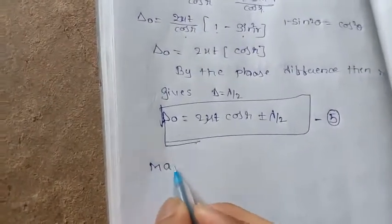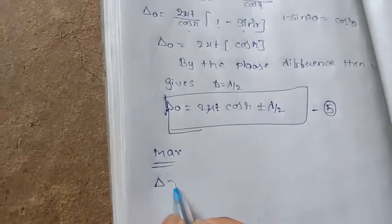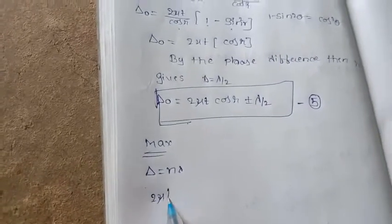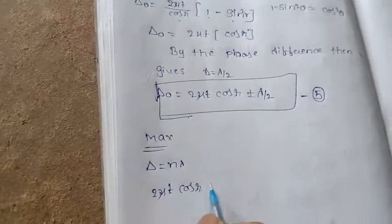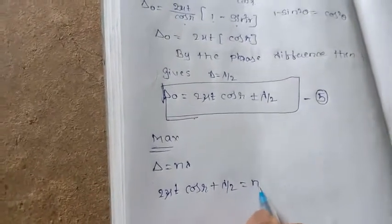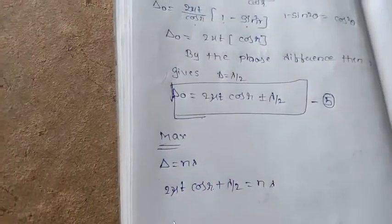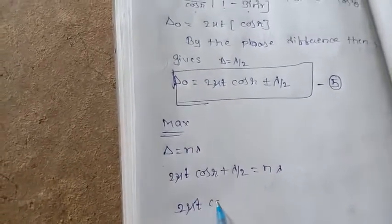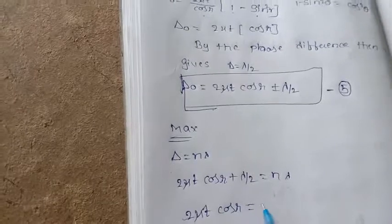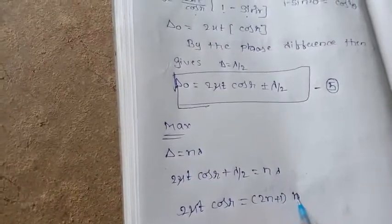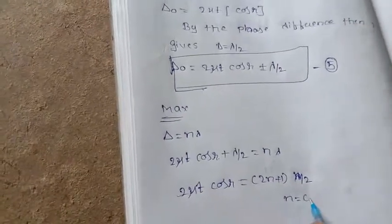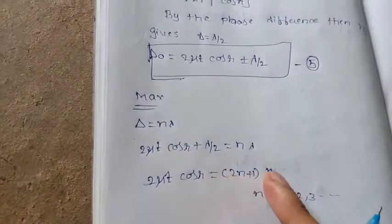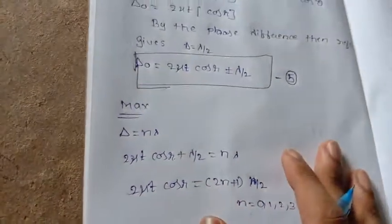Condition for maximum: delta equal to n lambda. Delta equal to 2μt cos r plus lambda by 2 equal to n lambda. 2μt cos r equal to (2n plus 1) lambda by 2, where n equal to 0, 1, 2, 3, and so on. As we substitute 0, the same equation is going to repeat again.